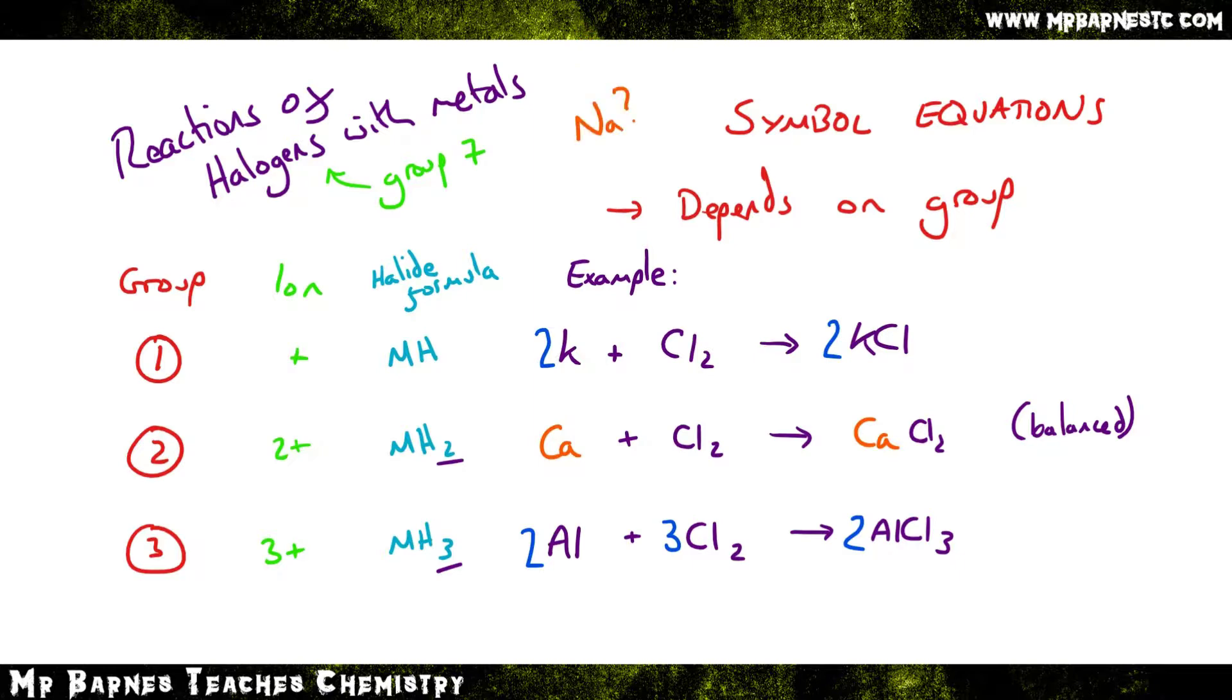If I had sodium, which is in group 1, I would replace my K, so I'd have 2 Na plus Cl2 goes to 2 NaCl. And if I had gallium, which is in group 3, I'd replace aluminium with it. So it would be 2 Ga plus 3 Cl2 goes to 2 GaCl3.